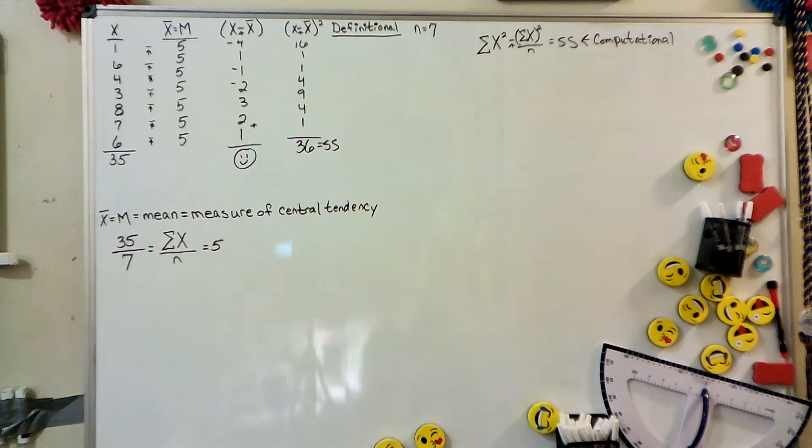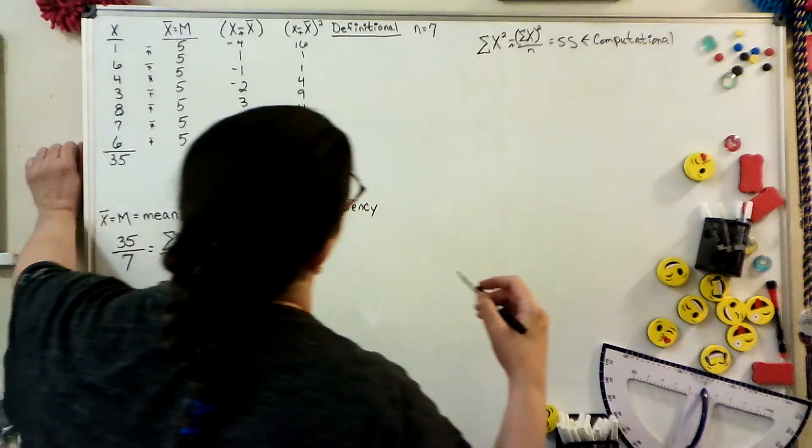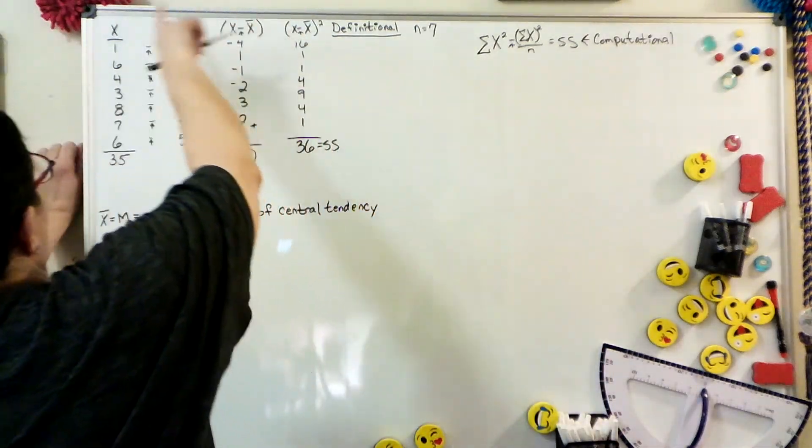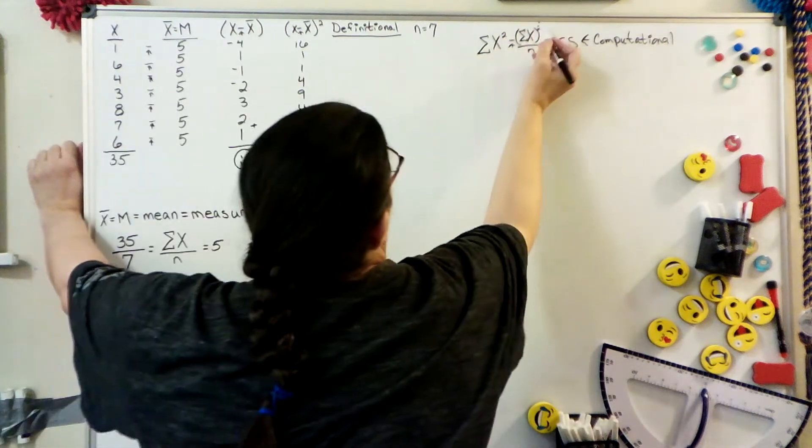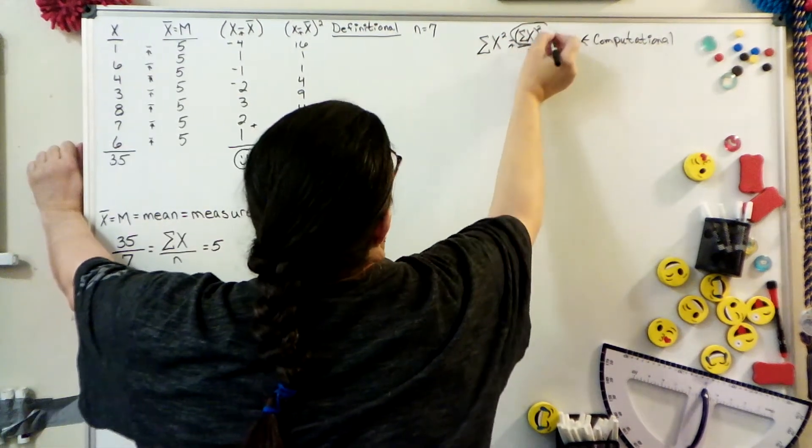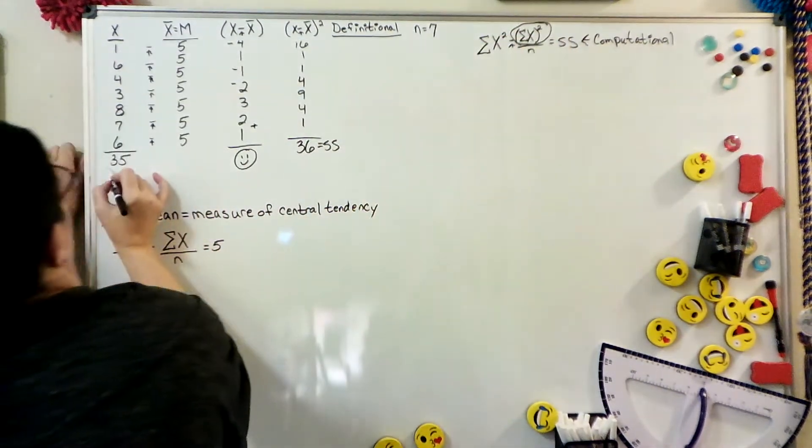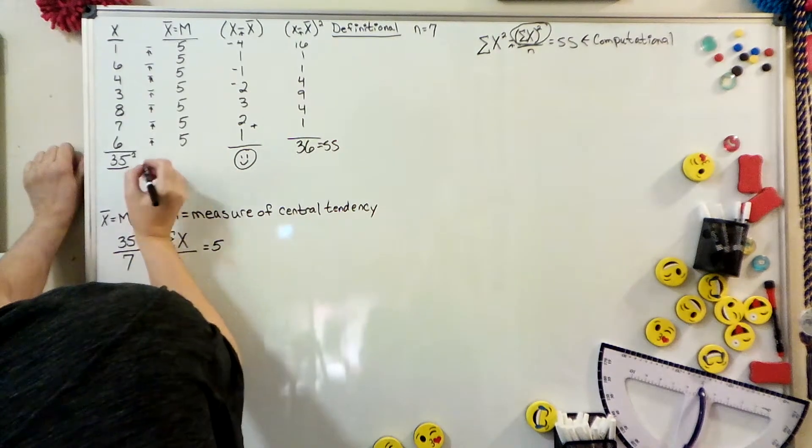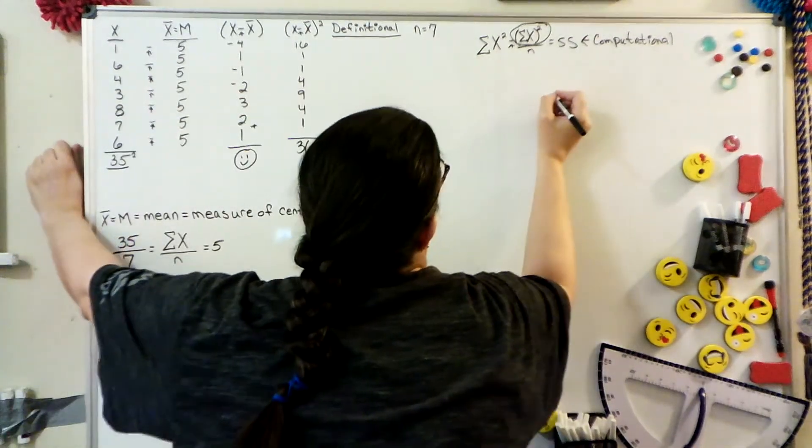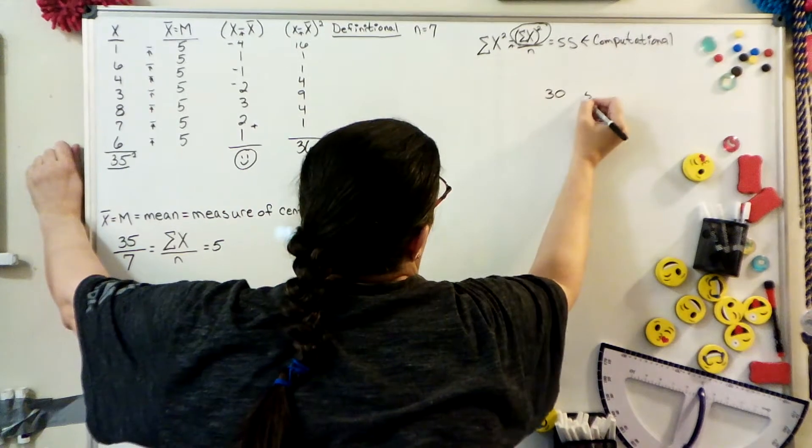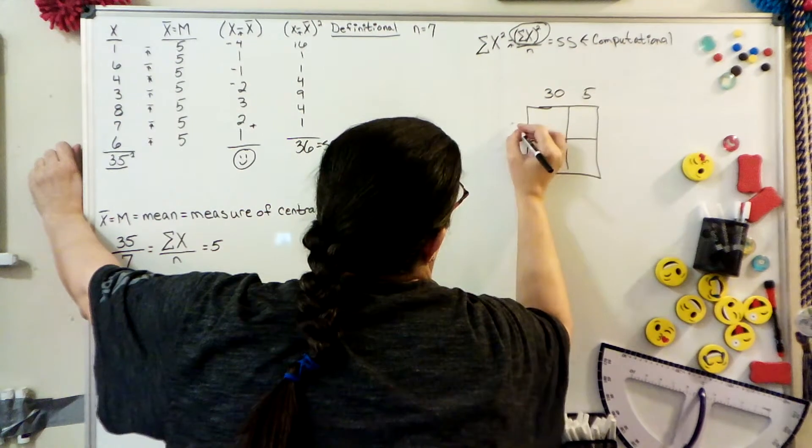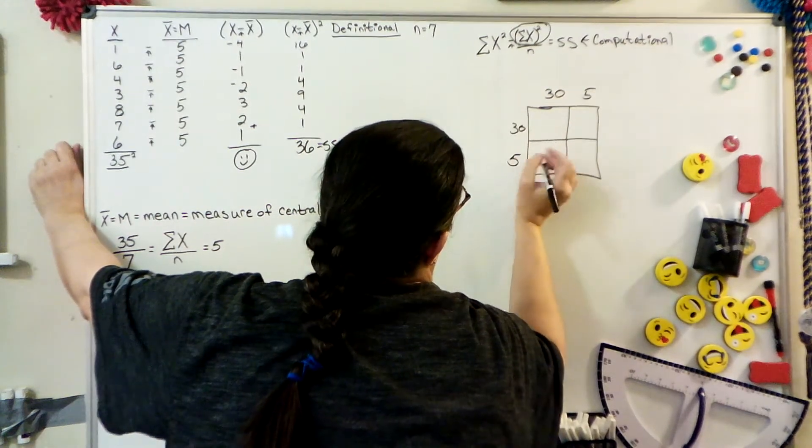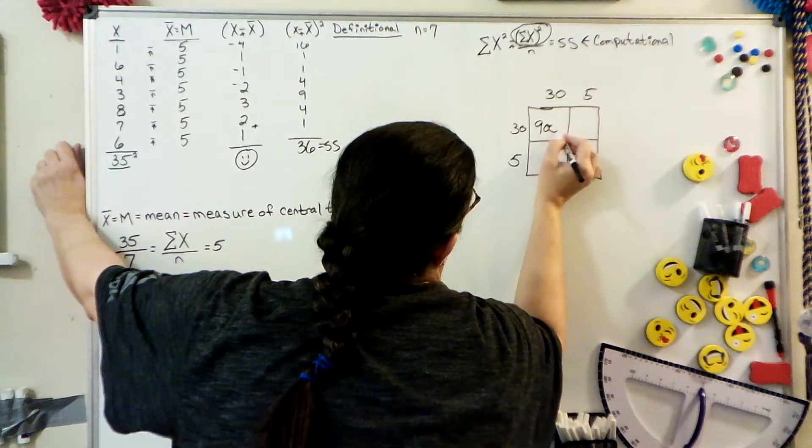Now we'll do the computational formula. For the computational formula, this piece here is just the total squared. Now I make a mistake when I do this, but all my little boxes are correct. The point is to use your little boxes, so 3 times 3 is 9, and then add your zeros. 3 times 5 is 15, add your zero. Then you add all those up.